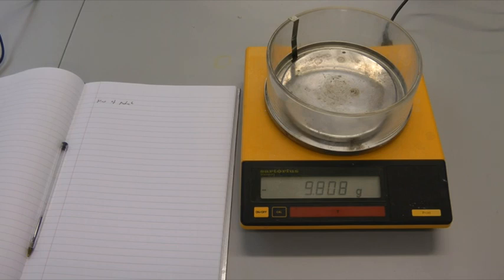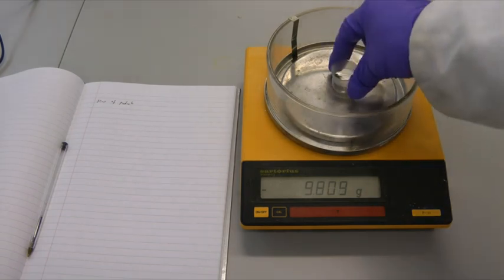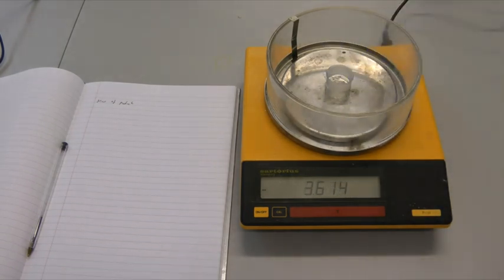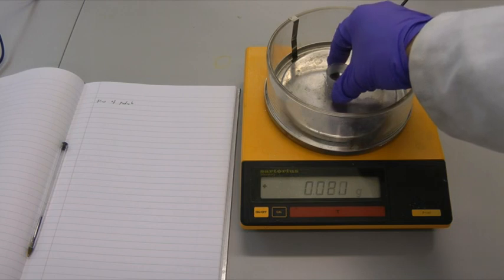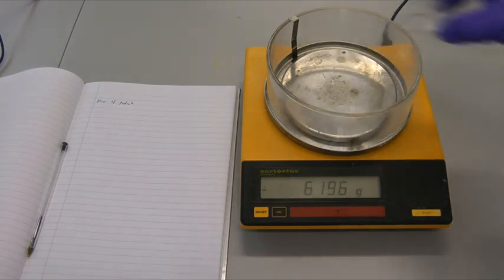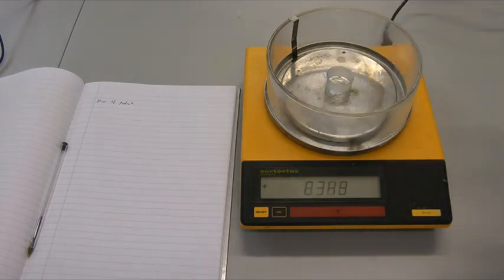Sometimes you might want to work out the mass of product from a chemical reaction. As above, the balance should first be tared with a weighing boat or other container in place. This can then be removed and the product transferred before re-weighing. The mass obtained should then be recorded accurately.